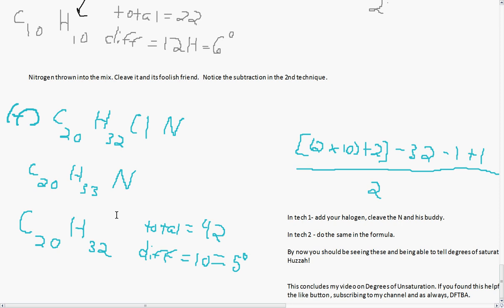For F, in technique 1, add your halogen, cleave the N and his little buddy. In technique 2, you're going to do the same in the formula. This halogen is going to come down and become a hydrogen. And then this nitrogen is going to leave, take its buddy with him, and you're left with the C20H32. So you can see, almost intuitively, that you're going to have a plus 1, minus 1 in here when you see this. So by now, you should be able to tell degrees of saturation in your head.